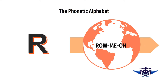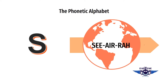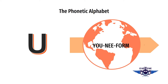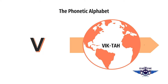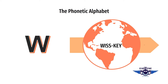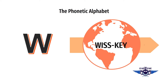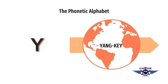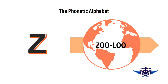R is for Romeo. Romeo. S is for Sierra. Sierra. T is for Tangle. Tangle. U is for Uniform. Uniform. V is for Victor. Victor. W is for Whiskey. Whiskey. X is for X-Ray. X-Ray. Y is for Yankee. Yankee. And finally, Z is for Zulu. Zulu.